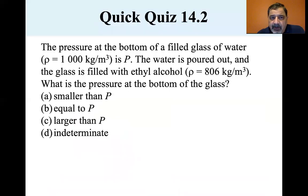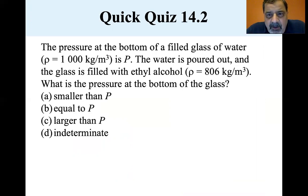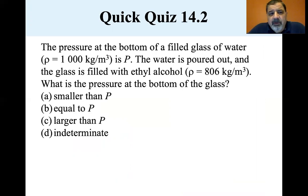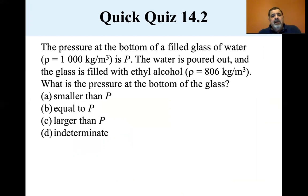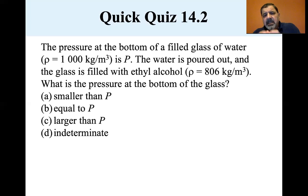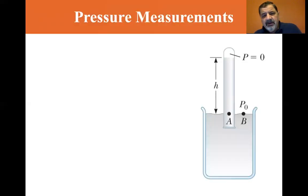Quick question: the pressure at the bottom of a glass of water (density 1000 kg/m³) is P. The water is replaced with ethyl alcohol (density 806 kg/m³). Is the new pressure smaller than P, equal to P, larger than P, or indeterminate? Because the density is less, the rho·g·h term is smaller, so the answer is smaller than P. We'll pick up with pressure measurements in the next video.